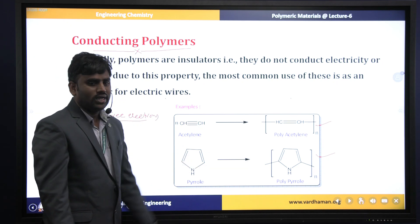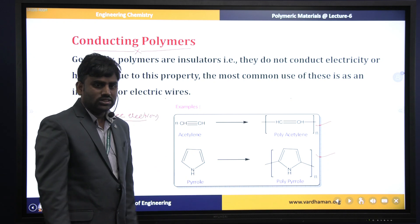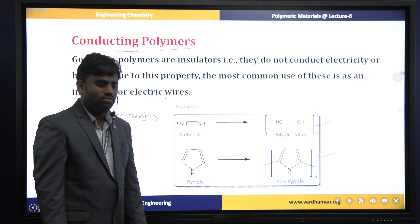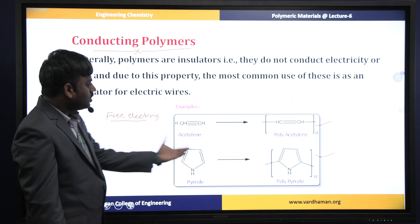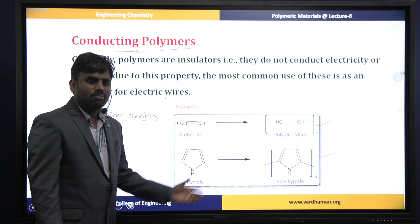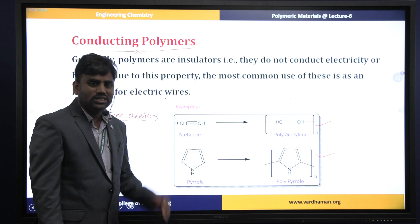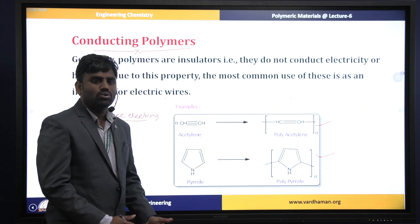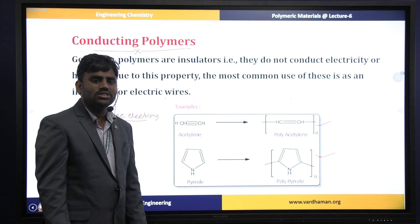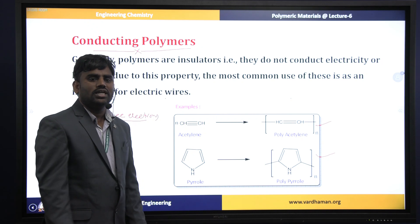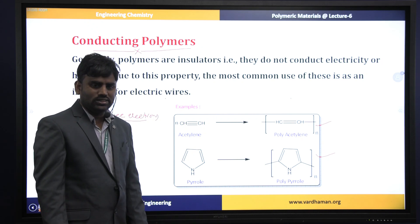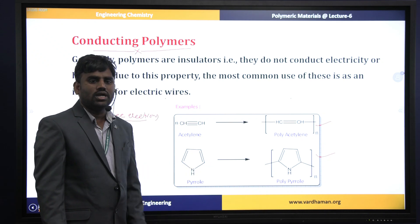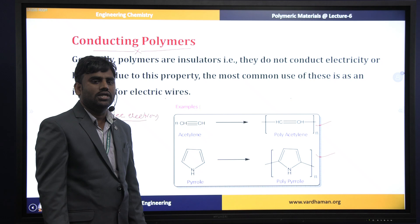How are they going to exhibit the conductance? Due to the availability of pi electrons throughout the backbone of the polymer chain. These pi electrons are continuously moving from one end to the other end of the polymer chain, and that is why they exhibit conductance — these are known as conducting polymers.